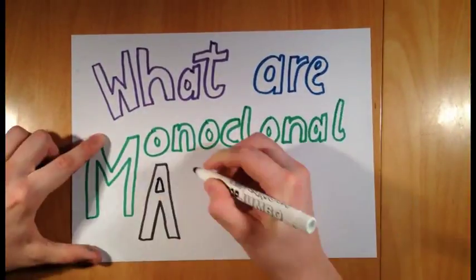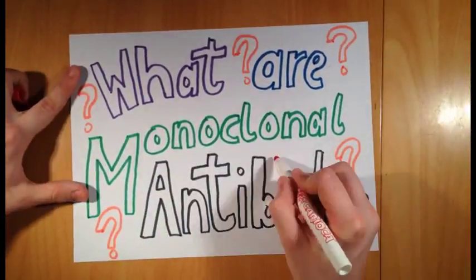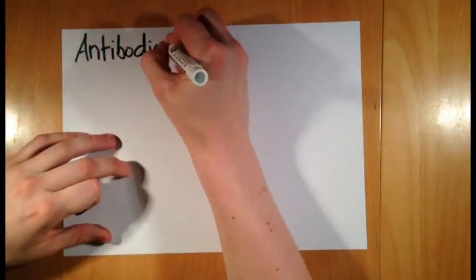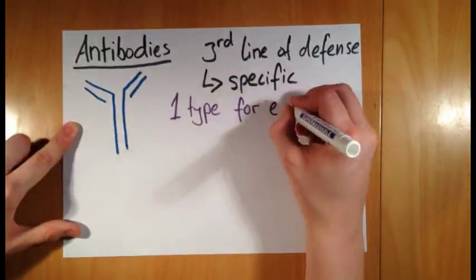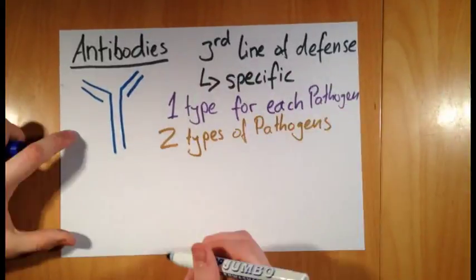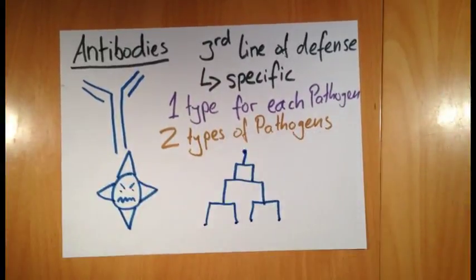What are monoclonal antibodies? Firstly, antibodies are a protein produced by the B cells in your blood. They are the product of the third line of defense from your body, which means that they are specific to one pathogen.